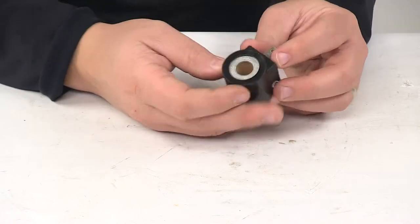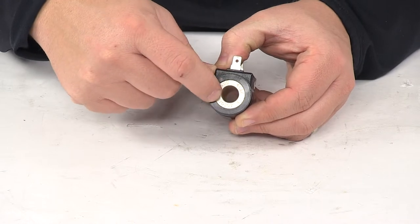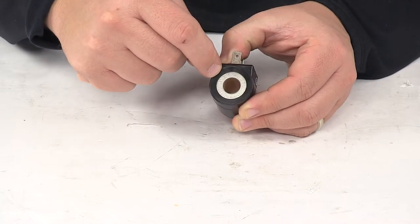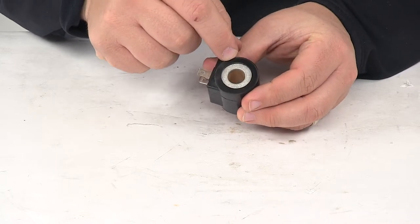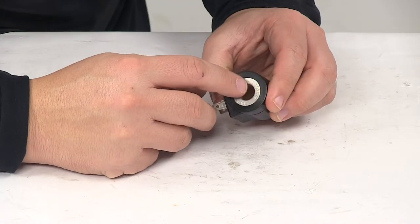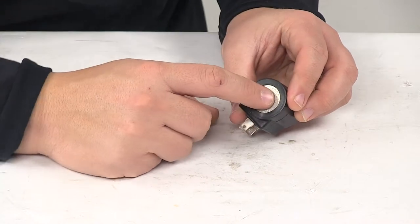Now on this side of the unit it has some engravings here around the coil portion. It's a 10 volt DC coil. This number right here says 4217 and then this one says MZ102072.